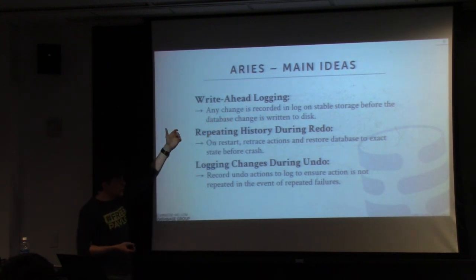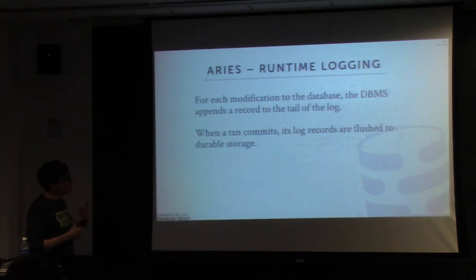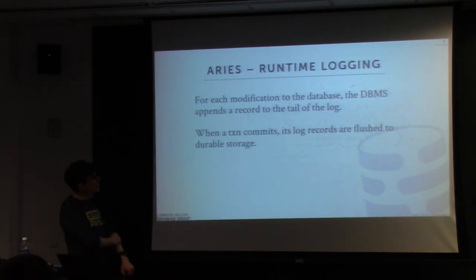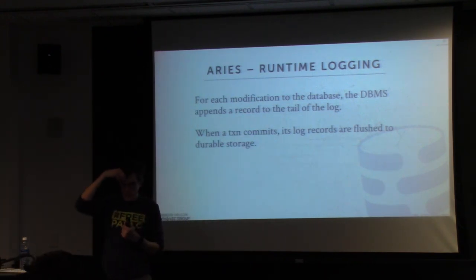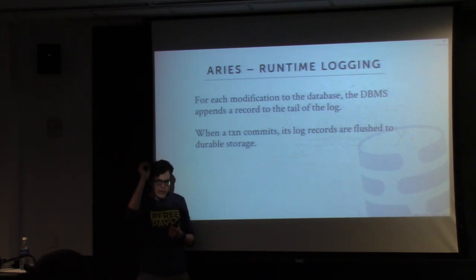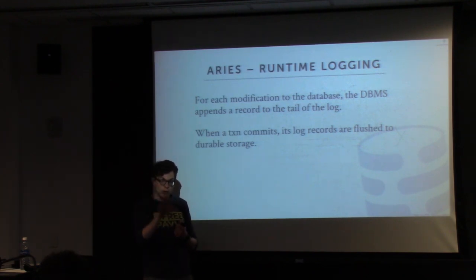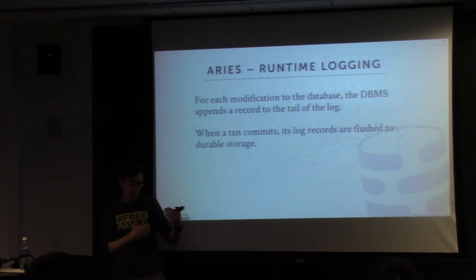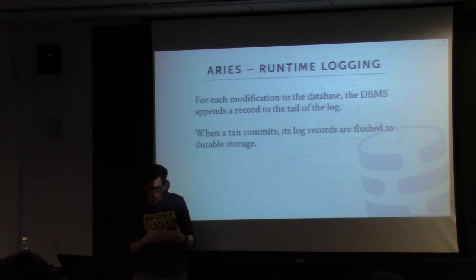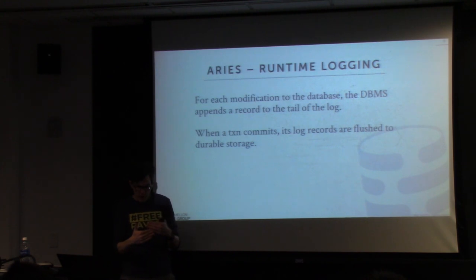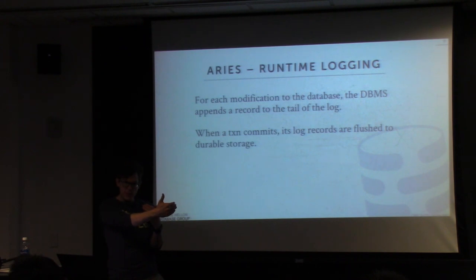In order to redo and undo, our write-ahead log records must have both the before image and the after image of every attribute that was modified. You need the before value to undo it and the new value to redo it. At runtime, any time a transaction modifies the database, you append a log record to the tail of the log. When a transaction commits, you must flush all log records corresponding to that transaction to disk. The log is written in sequential order, so log records from earlier uncommitted transactions may also get flushed — that's why we need the undo phase.